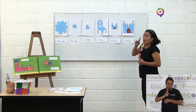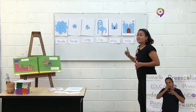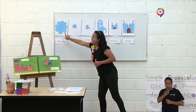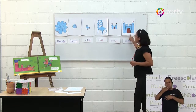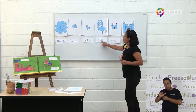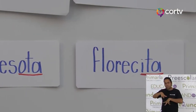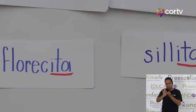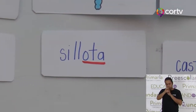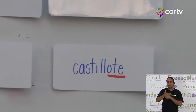Vamos a ver. Observa los dibujos que son grandes. Acuérdate que los aumentativos nos expresan un tamaño mayor. De las figuras más grandes como floresota, sillota y castillote, casi son iguales. Una termina en ota, ota al igual que la silla, y ote termina el castillo. Vamos ahora a ver las terminaciones de los diminutivos. Tenemos la florecita. ¿Termina igual que la sillita? Muy bien. Florecita y sillita terminan igual, terminan con ita. Castillito termina con ito.